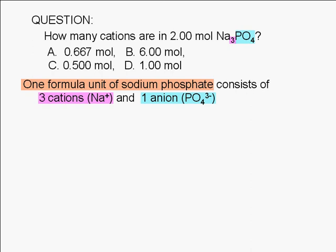Since a mole is just a group count, we can also say that one mole of sodium phosphate is made up of three moles of cations and one mole of anions. Note that the official abbreviation for mole is M-O-L, no E.